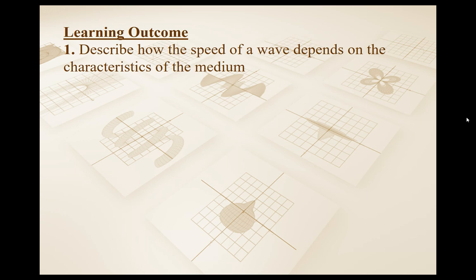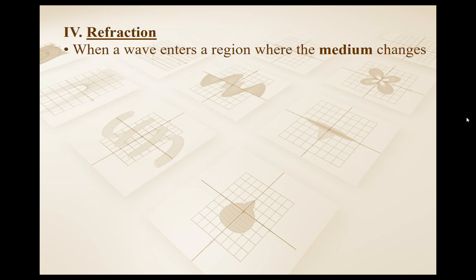The learning outcome is to describe how the speed of a wave depends on the characteristics of the medium. Refraction occurs when a wave enters a region where the medium changes, and a medium is an area with roughly a uniform density. Examples include going from cold water into hot water, or in the case of a spring, from a smaller spring stiffness to a larger spring stiffness. Refraction occurs when your wave moves into a different medium.